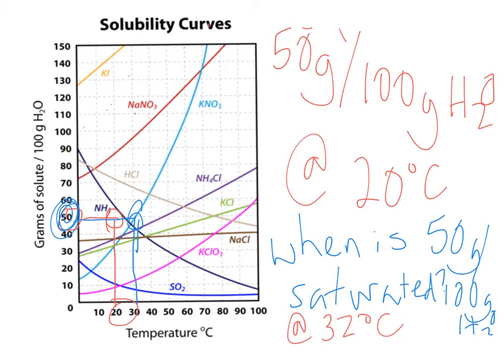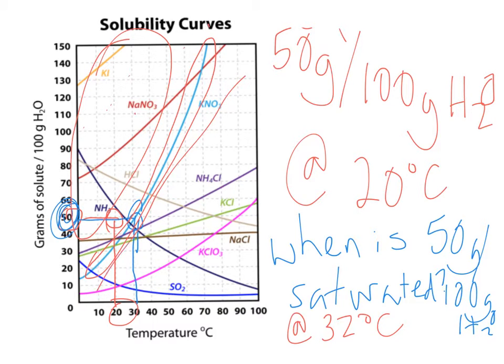So you know, for potassium nitrate, anywhere up here would be considered to be supersaturated. Anywhere on the line would be considered saturated. Then what does anything under or below the line count as? And that would be unsaturated. So those are just three important things to note.